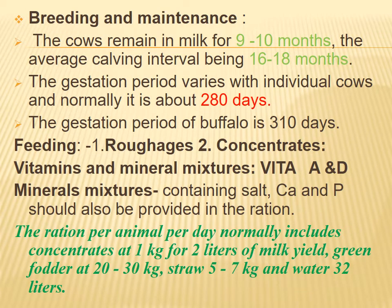Breeding and maintenance: the cow remains in milk for nine to ten months, with the average calving interval being 16 to 18 months. The gestation period varies with individual cows and is normally about 280 days. The gestation period of buffalo is 310 days.